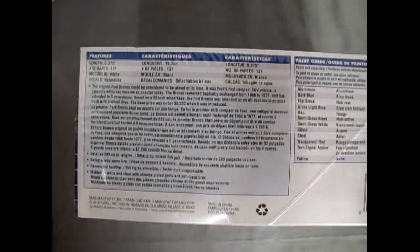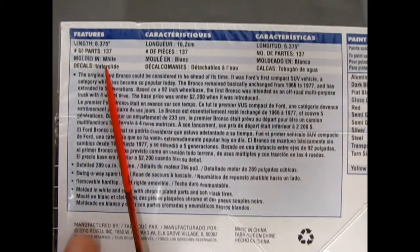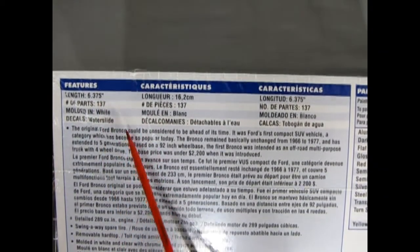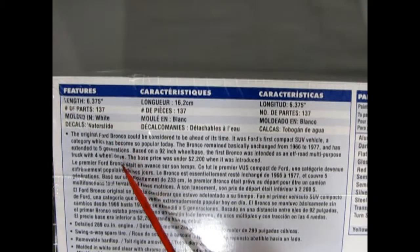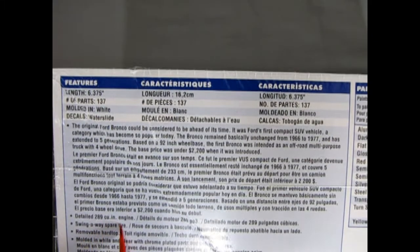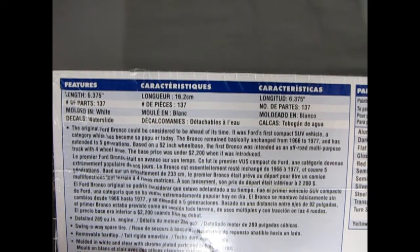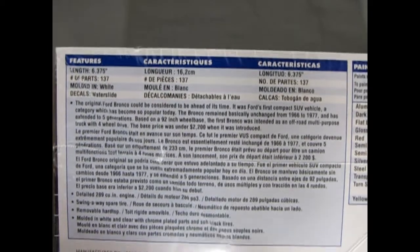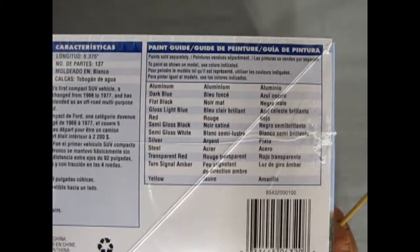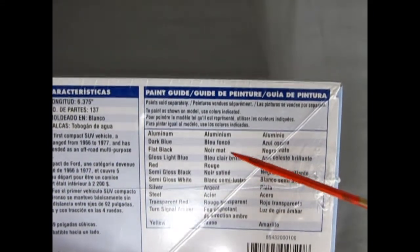Now if we look on the side of the box here we get some details onto this Ford Bronco. You get a length of 6.375 inches. 137 parts molded in white. Waterslide decals. There's a history of it all. It's got a detailed 289 cubic inch V8 engine. Swingway spare tire. Removable hardtop molded in white and clear with chrome plated parts and soft black tires. This kit came out in 2016 so it's nice to again get new releases or new-ish releases. Although this is now four years old but still. I've only seen one other reissue in this with our box arts.